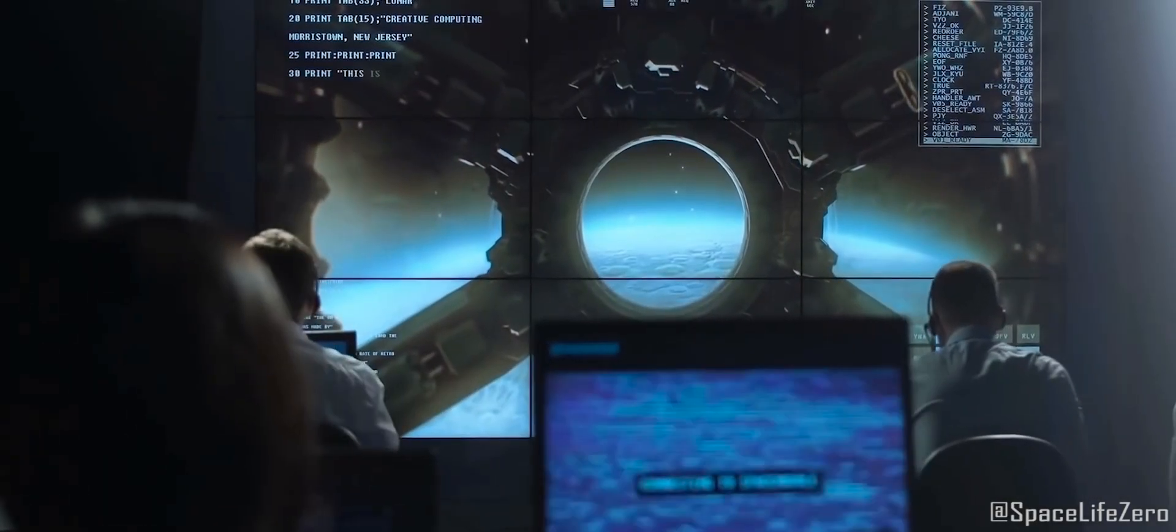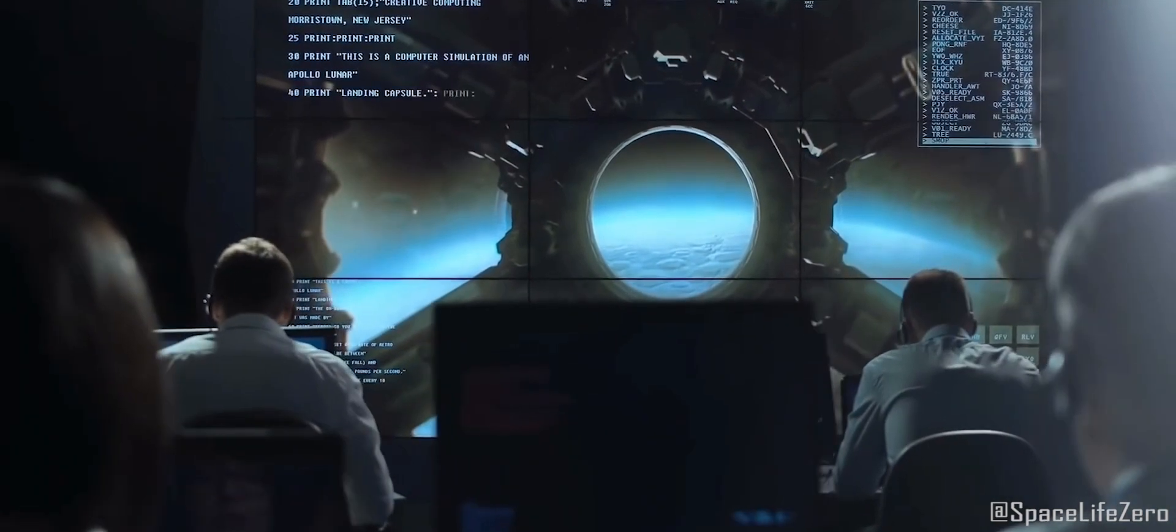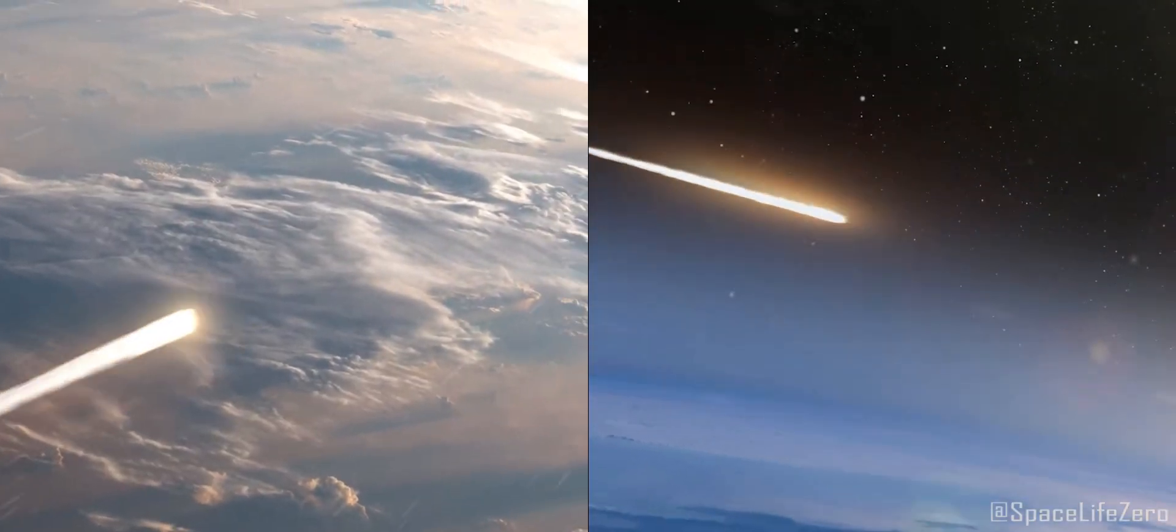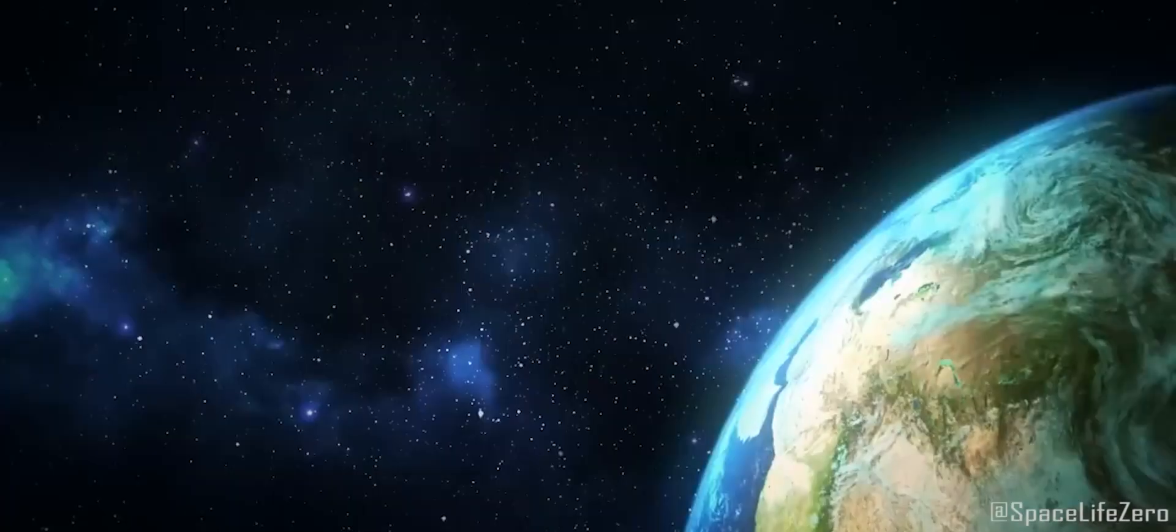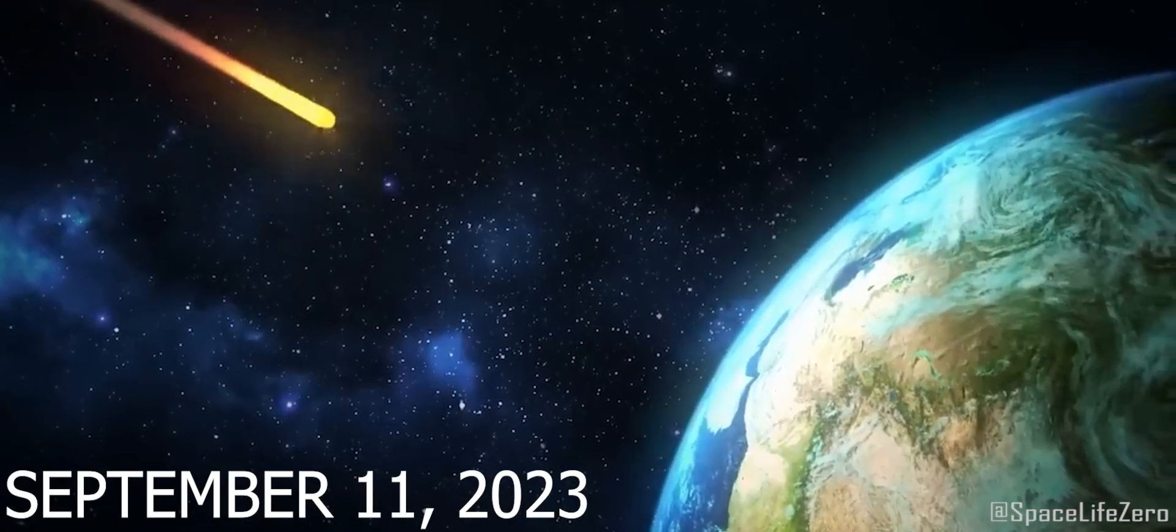According to information received from NASA's Jet Propulsion Laboratory, two asteroids are staggering at very high speed towards our planet on September 11, 2023.